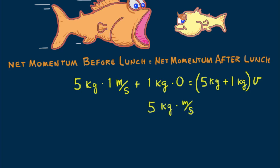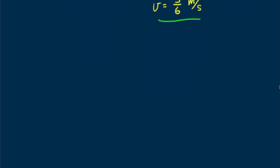Continuing, and canceling kilograms, we see that the velocity after lunch is 5/6 meters per second. This velocity is in the same direction as the initial velocity of the large fish. We employ the conservation of momentum and come to a solution. Yum!